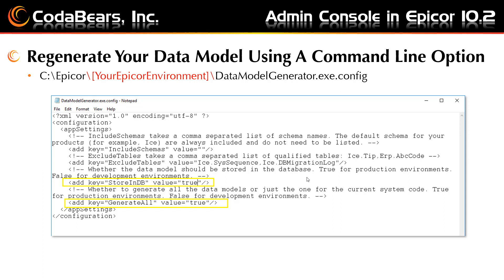First, you need to modify the config files shown in this bullet point here using Notepad and changing the generate all and the store in DB settings. EPICOR recommends these both be set to true. Do you want to generate all the data models in this environment or only the data model that matches the current system code? I think this means all companies and plants in the EPICOR environment.